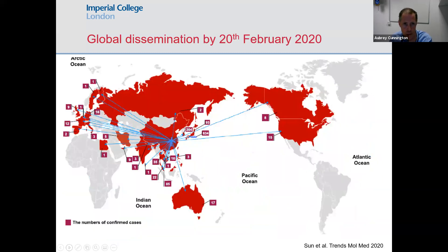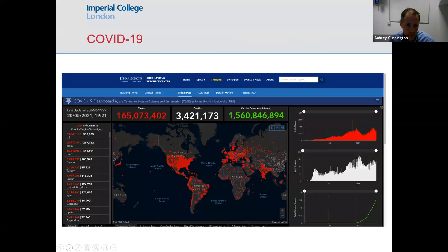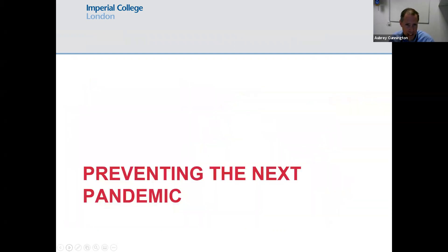Even by 20th February last year, when we were still wondering what to do about it in the UK, there was already virus widely disseminated around the world. That explains why we have not been able to contain this very well.